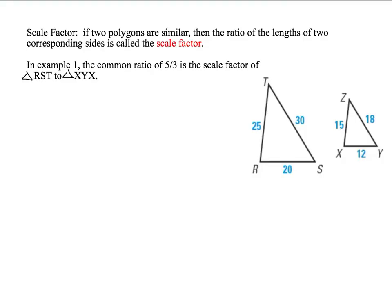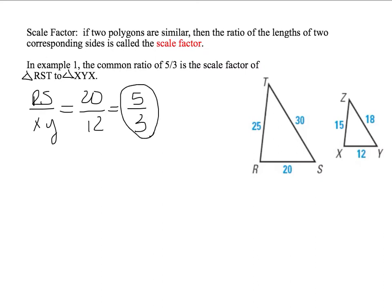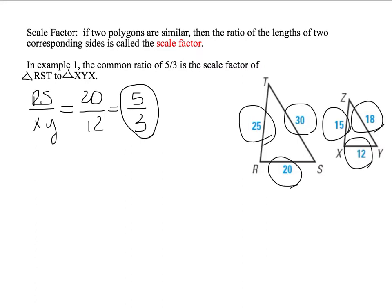Another vocabulary word: scale factor. If two polygons are similar, then the ratio of the lengths of two corresponding sides is called the scale factor. In example 1, the common ratio of 5 over 3 is the scale factor of triangle RST to triangle XYZ — we got that by saying RS over XY is 20 over 12, which is 5 over 3. That is your scale factor.